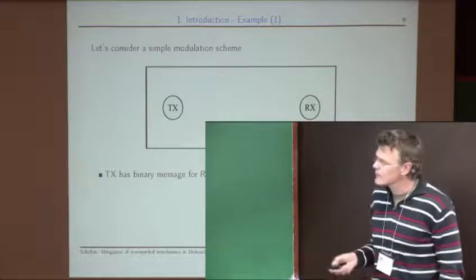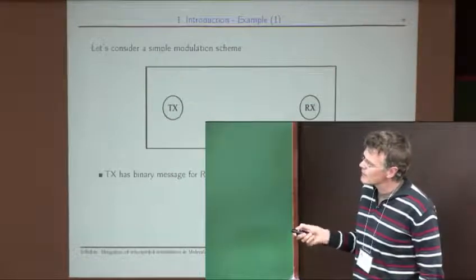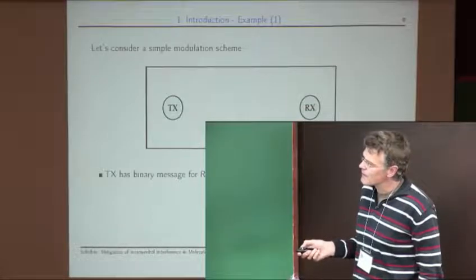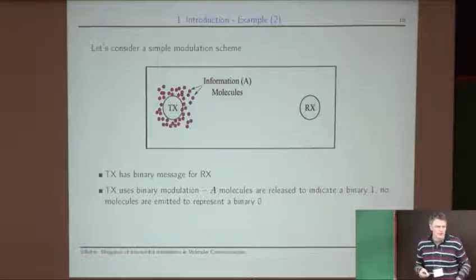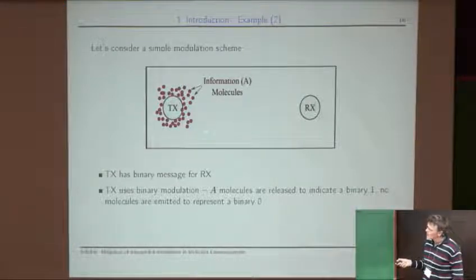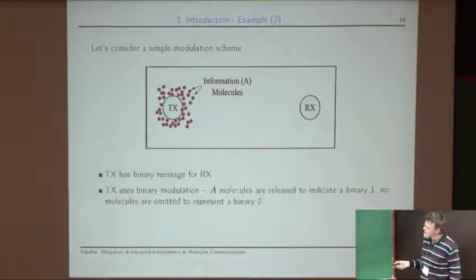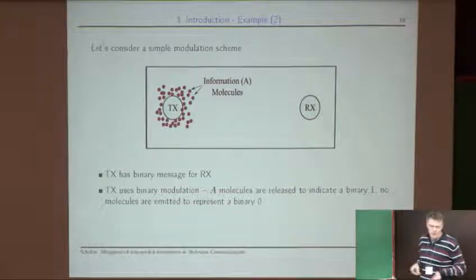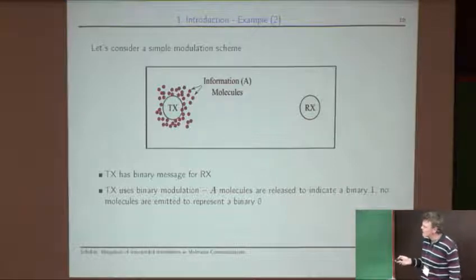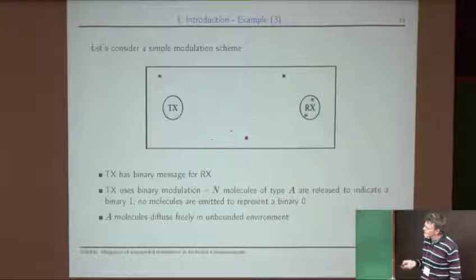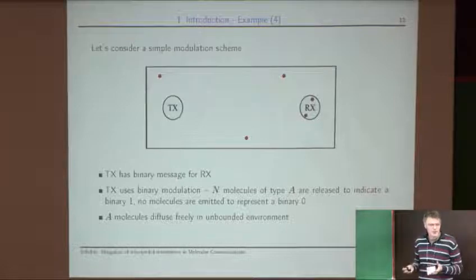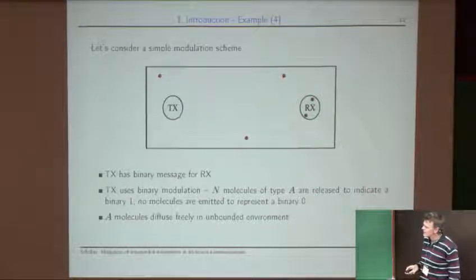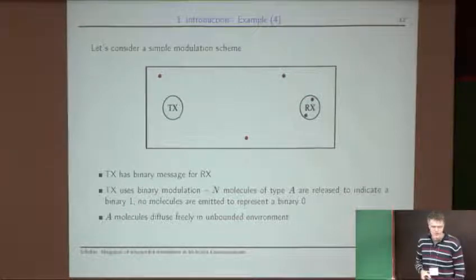The system model is very simple. We have a transmitter and a receiver. The transmitter has a binary message to send, and we use on-off keying: to transmit a binary one, the transmitter releases N_A molecules — generic signaling molecules. If a zero is to be sent, no molecules are transmitted. These molecules diffuse in the medium, some arrive at the receiver, and we assume the receiver can count, at a certain time, the molecules in its neighborhood.